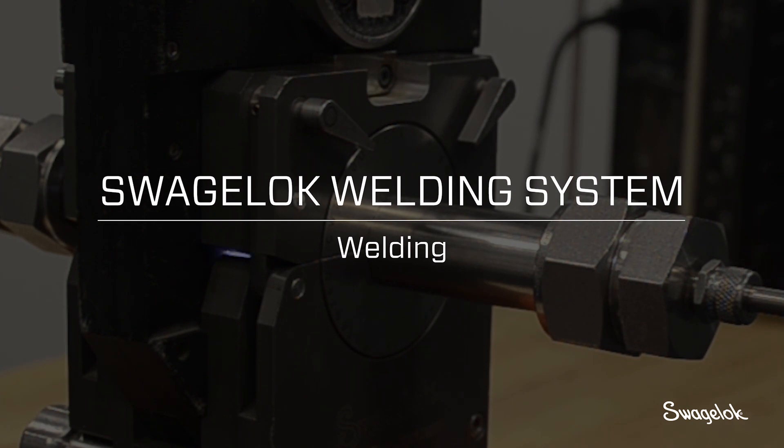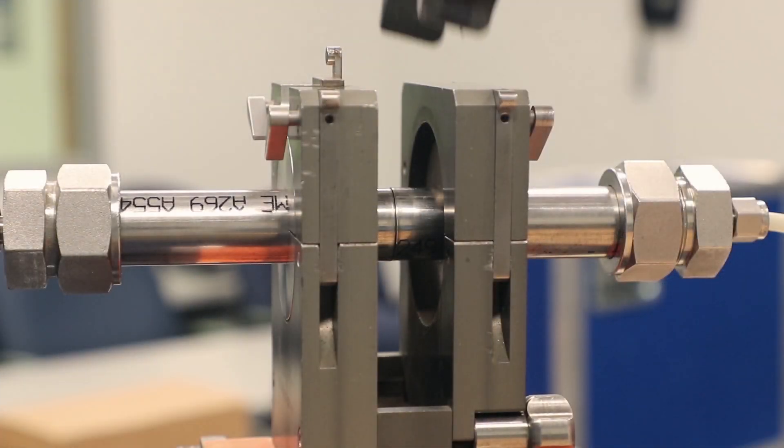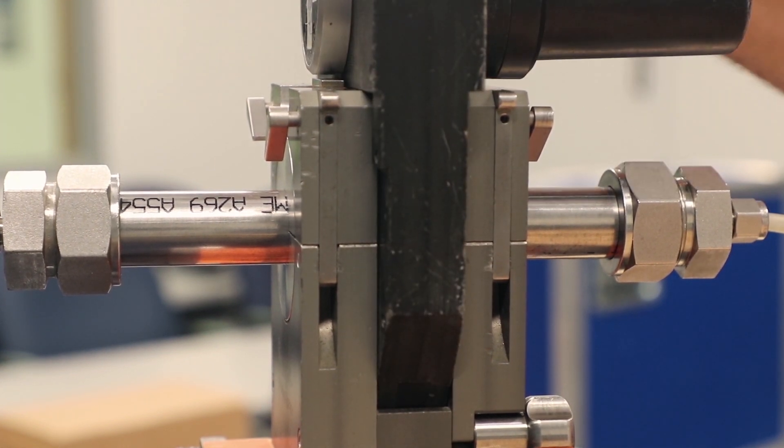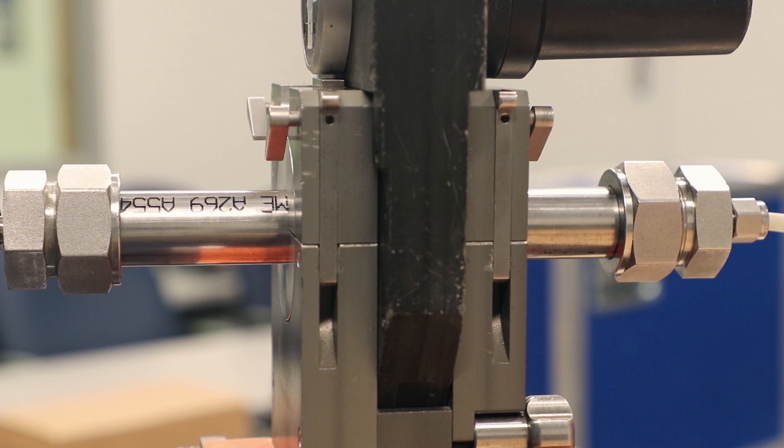To install the weld head into the fixture block when the tubing joint is ready, it's as simple as sliding the weld head into place. There's a simple locking mechanism to make sure the weld head is held securely into the fixture block.